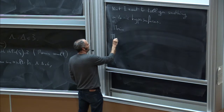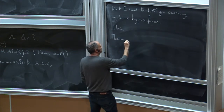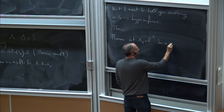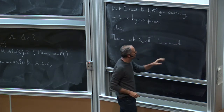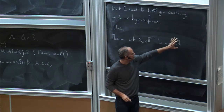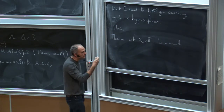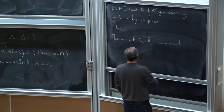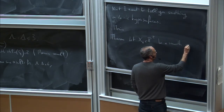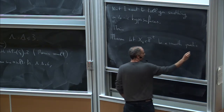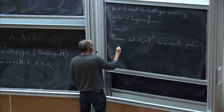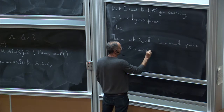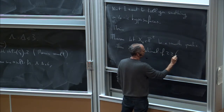The theorem we are aiming at is the following. Let X_4 inside P^r be a smooth quartic — we could allow singularities but there is a class that works and a class that doesn't, so for simplicity let us stick to the smooth case. Then X is unirational if r is greater than or equal to six.